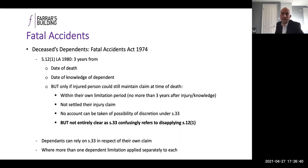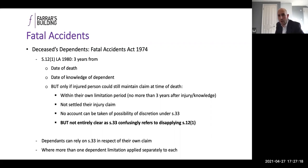Limitation is applied to each dependent separately — so children of various ages and a widowed spouse will be assessed individually. Child dependents will still benefit from the disability exception — limitation doesn't start ticking for them until three years after they reach the age of majority. If child claimants can still bring their claim, and an adult dependent would be outside of time, it's likely the court will exercise its section 33 discretion because the defendant will be facing a dependency claim in any event.